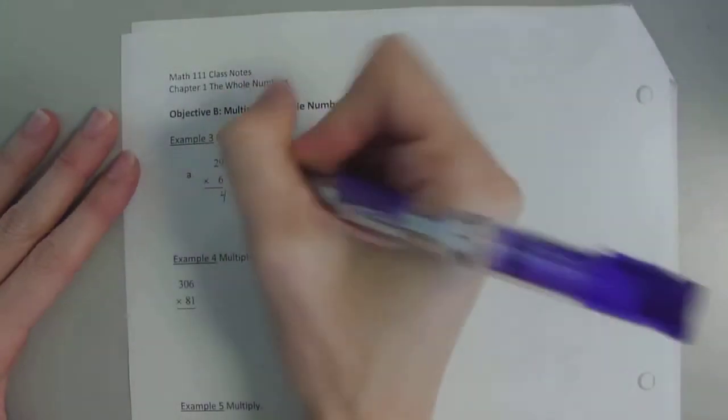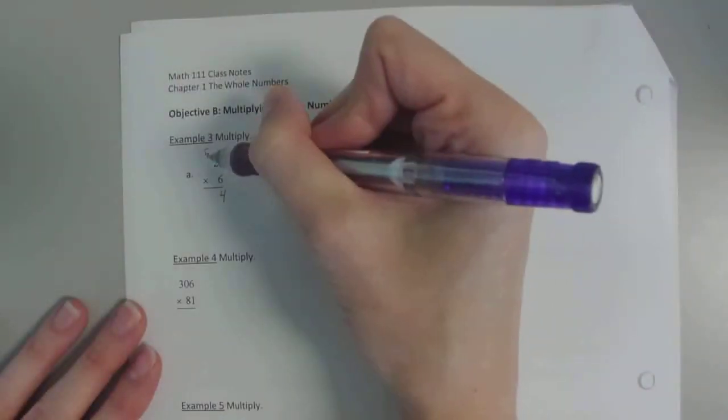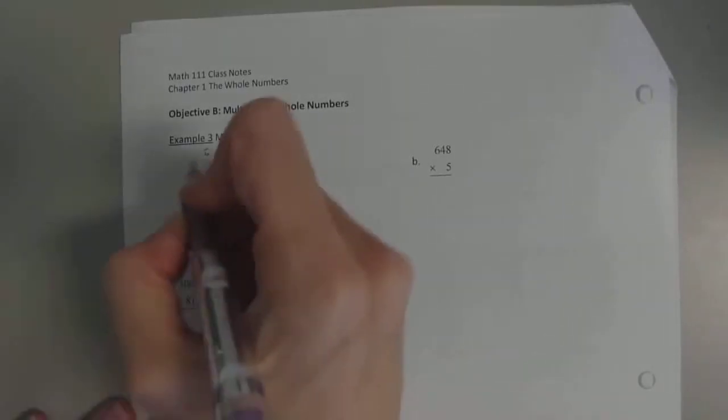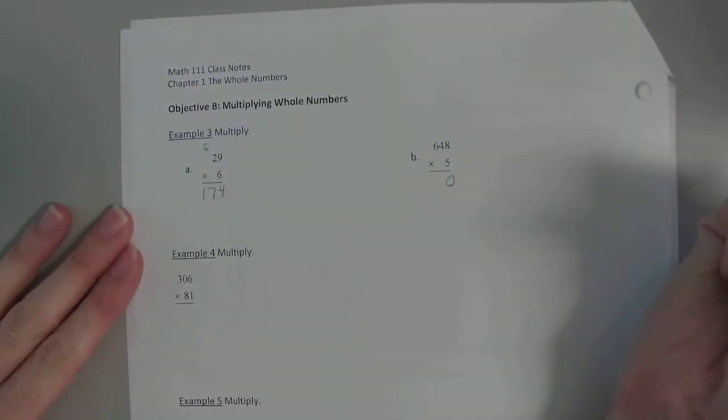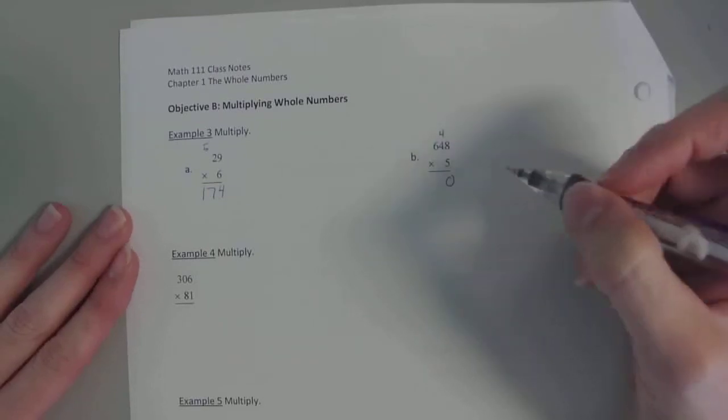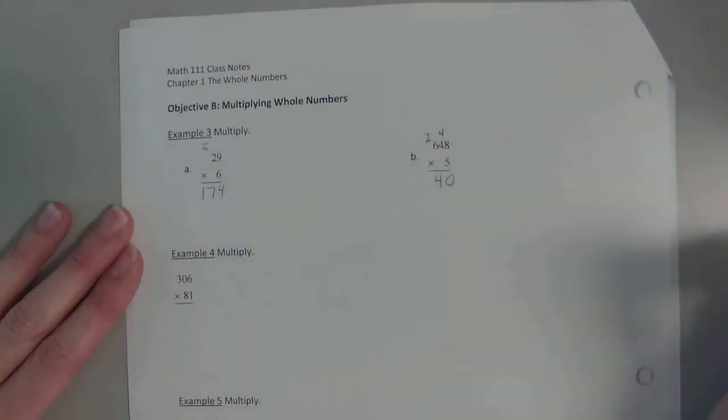So 6 × 9 is 54. We cannot put 54 down. What do we have to put down? The 4 and carry the 5. Remember, these only hold the ones. So when it comes to 54, the 4 is the ones, the 5 is the tens. We carry over. This is important because when it's addition, you can just start adding straight down. With multiplication, you actually have to multiply first, then add what you carry. So we'll have 6 × 2 first. 12 + 5 will give us 17. So 174.